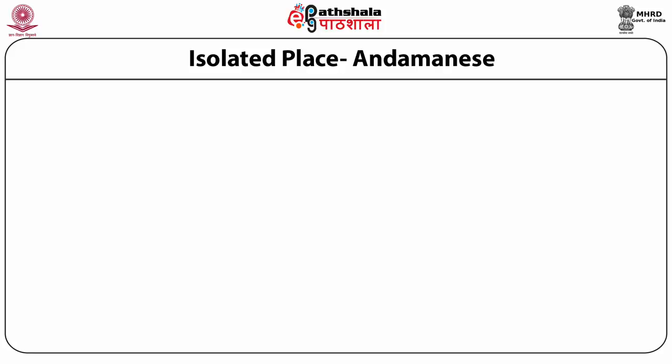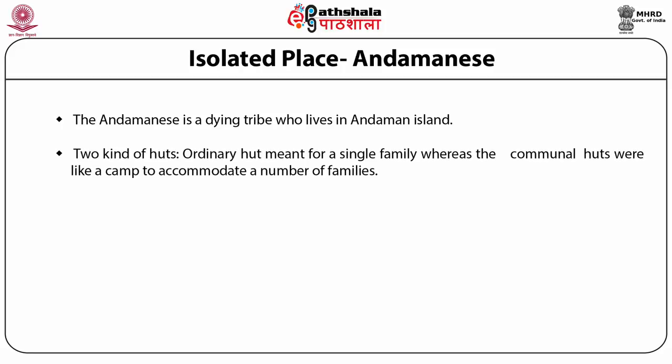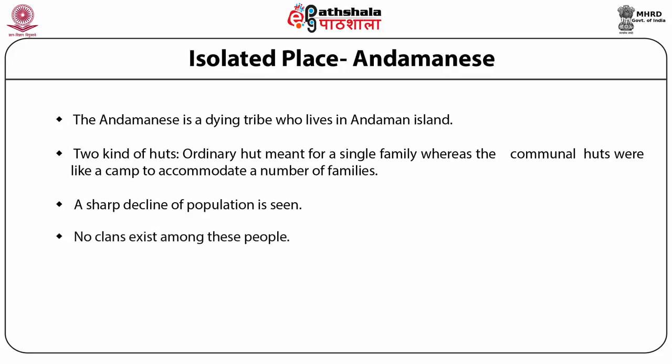In addition to the three major zones, there is also a small isolated zone which includes the Andaman and Nicobar Islands. Some important tribes are Jarwa, Onge, Sentinelese, Shompen, Andamanese, Nicobarese, etc. The Andamanese is a dying tribe living in the Andaman Islands at the food-gathering stage. They had two kinds of huts: ordinary huts meant for a single family, and communal huts like a camp to accommodate a number of families. A sharp decline in population is seen among the Andamanese. No clans exist among these people.